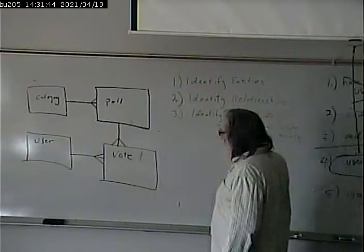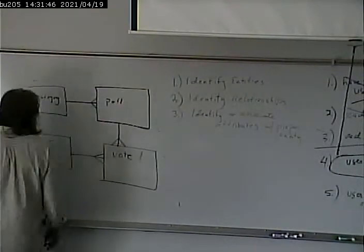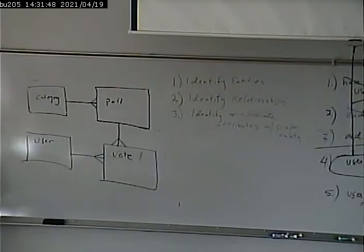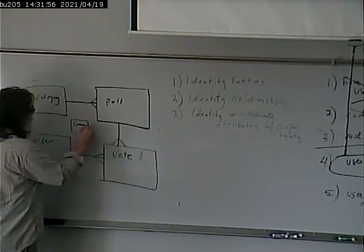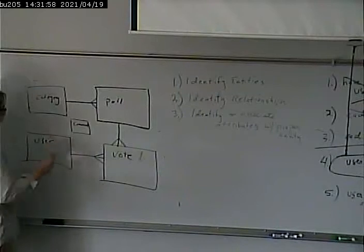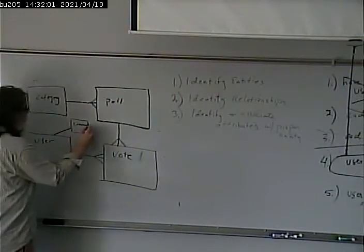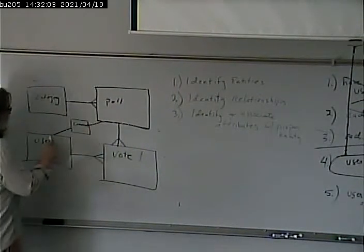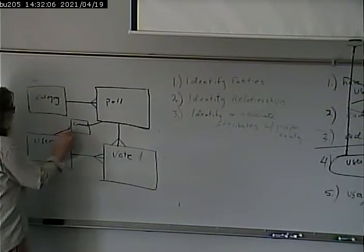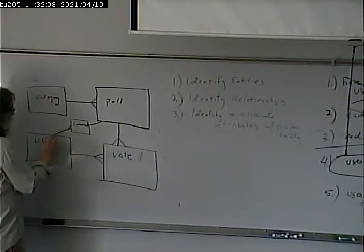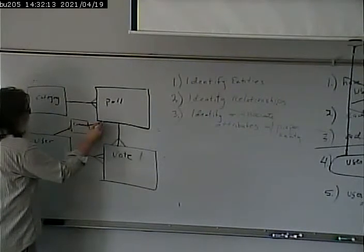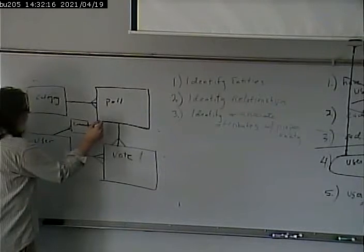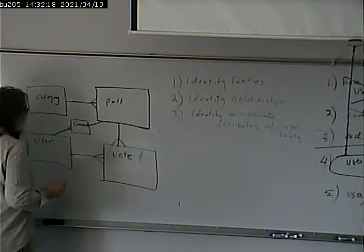A user can comment on a poll multiple times. Comment entity? One user can have how many comments? Many. Each comment is associated with how many users? Just one. A comment is associated with how many polls? One poll. Each poll could have how many comments? Many.